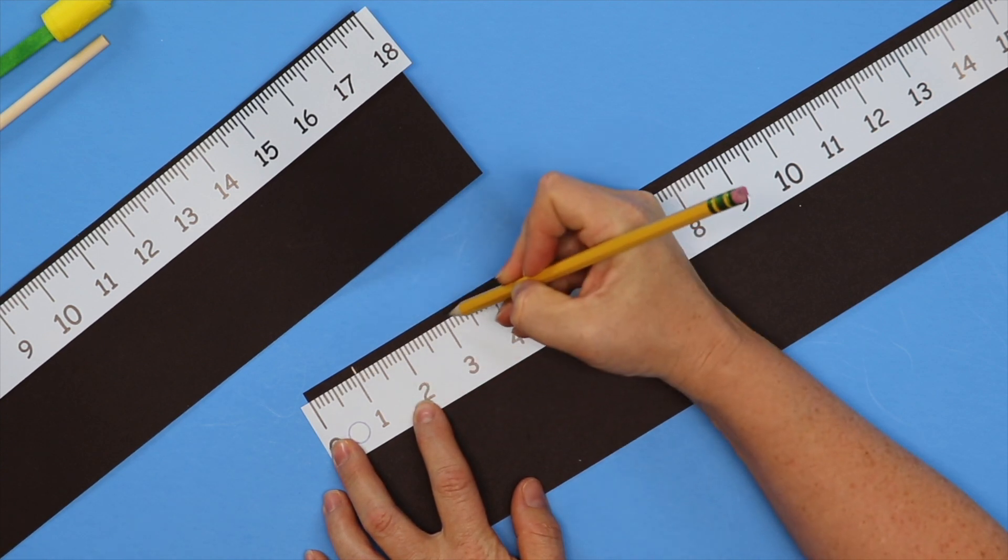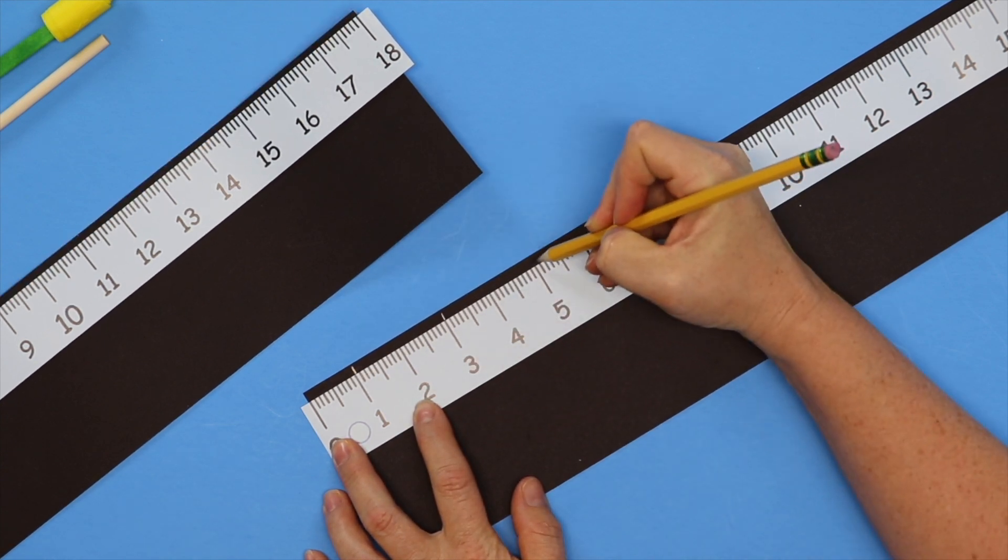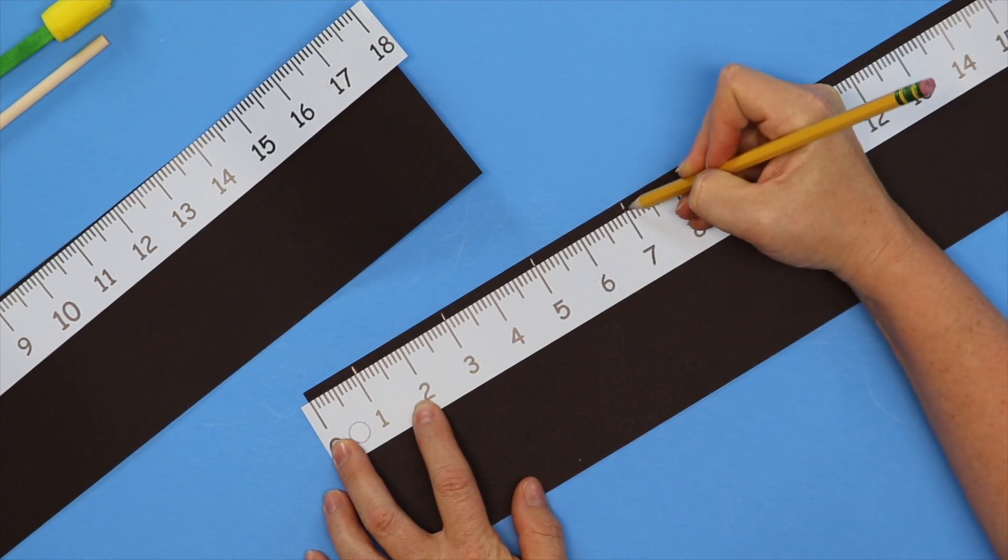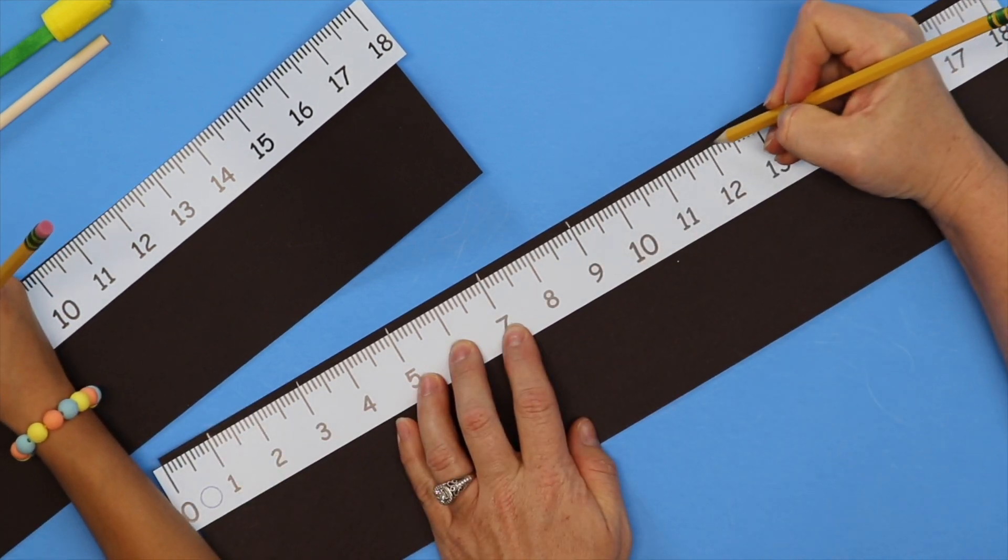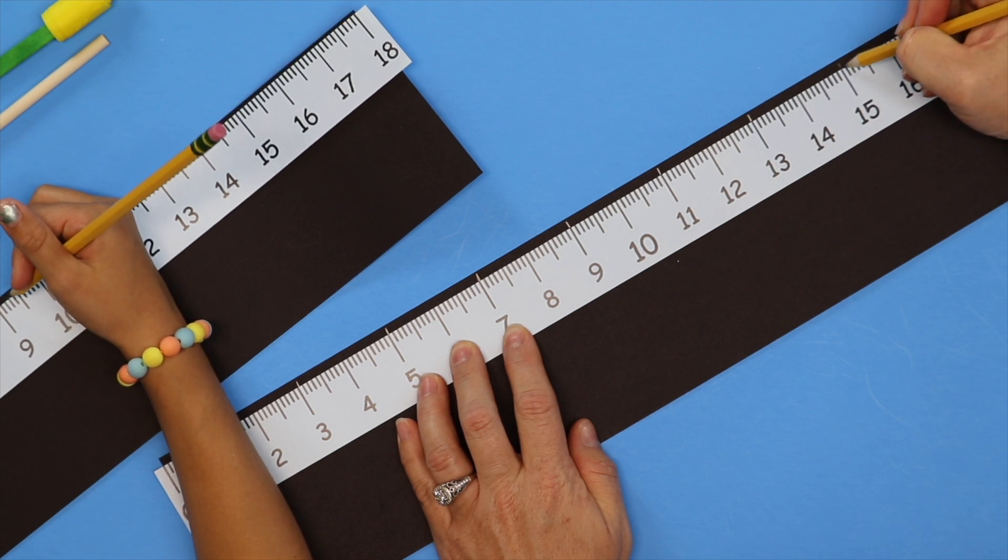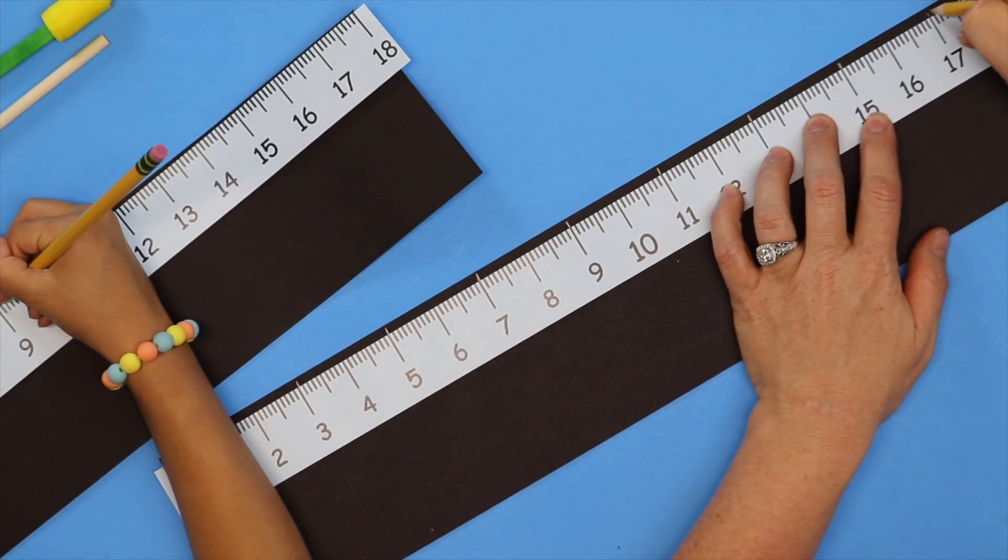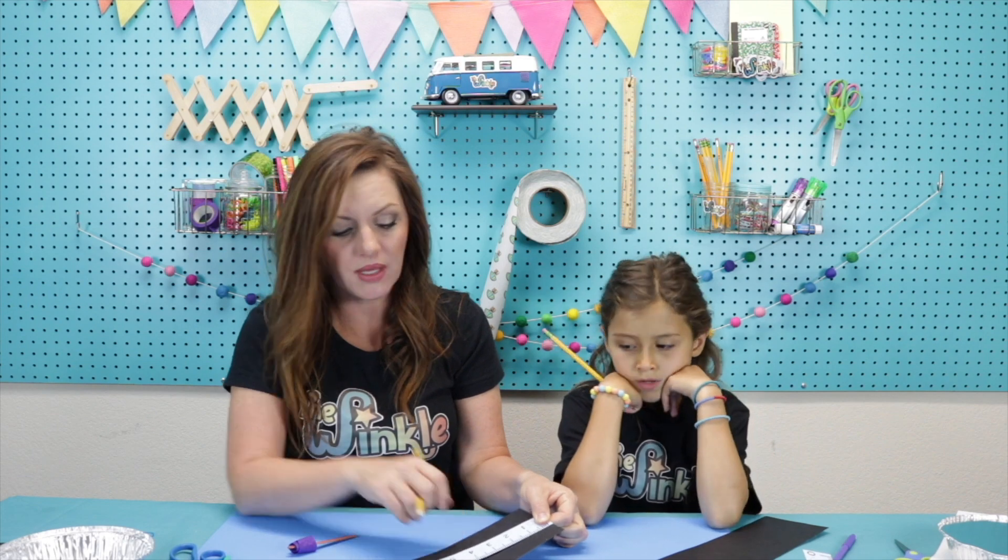So let's mark those. We're going to start with the one. Mark the three, five, seven, nine, 11, 13, 15, 17. Good and that whole time Ella was making sure that the zero was right where it needed to be or else your measurements will be a little bit off.